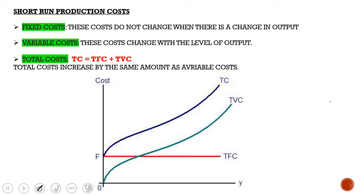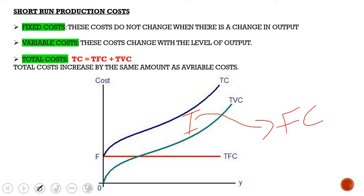Short run production costs consist of fixed costs, variable costs, and total costs. Fixed costs do not change with output — they stay the same. Variable costs change with output, so the more you produce, the higher your variable costs. Total cost equals fixed costs plus variable costs, and total costs increase by the same amount as variable costs. The difference between total cost and total variable cost curves is your fixed costs.